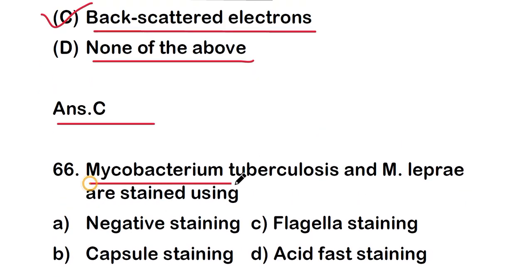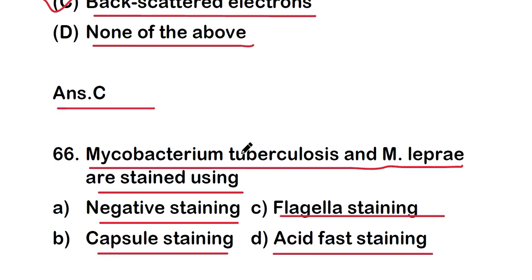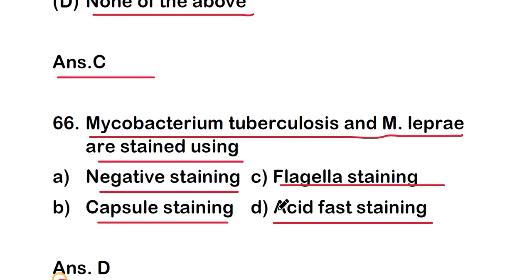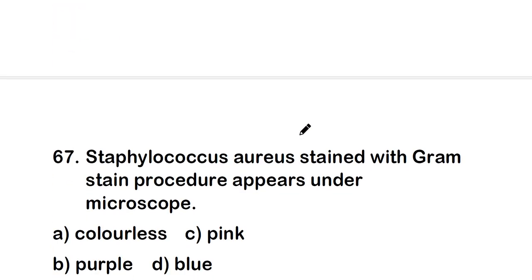Next question: Mycobacterium tuberculosis and Mycobacterium leprae are stained using which method? The right answer is option D — acid-fast staining. Mycobacterium tuberculosis and Mycobacterium leprae are stained with the acid-fast staining method, so they are acid-fast bacteria.